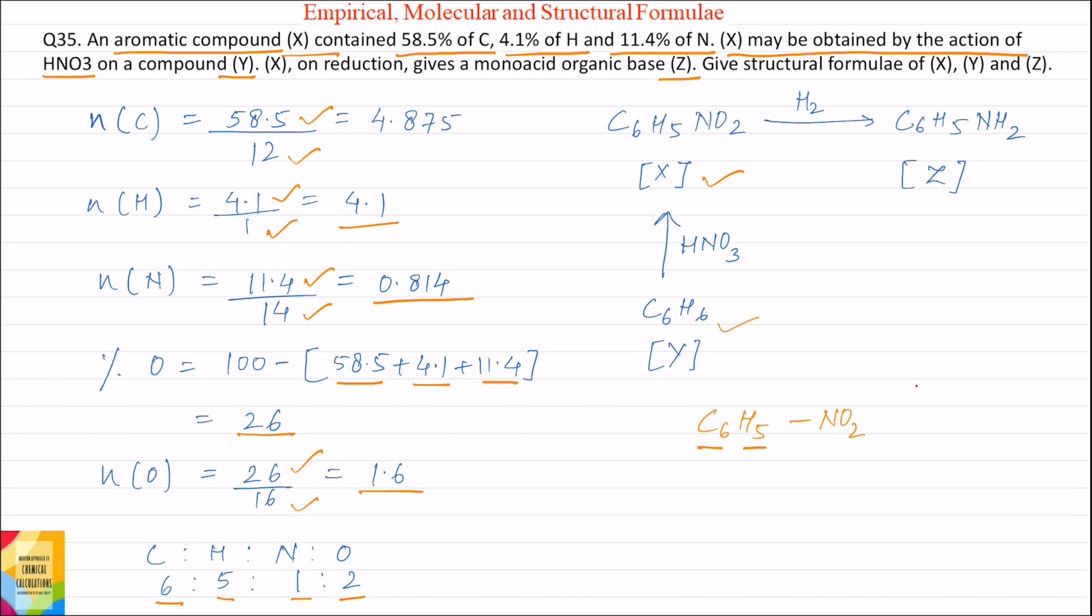So Y is benzene. Next, X on reduction gives mono acid organic base Z. So if we do reduction of C6H5NO2, it will give C6H5NH2. Therefore structure of Z is C6H5NH2.